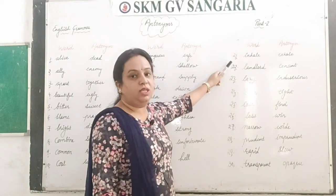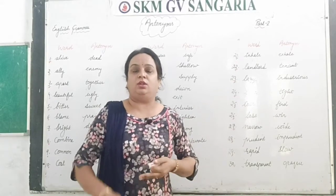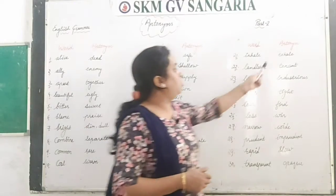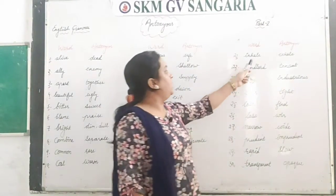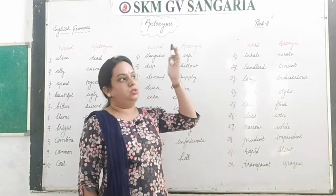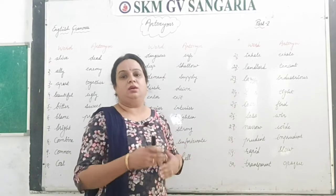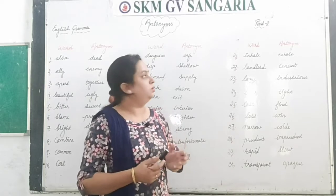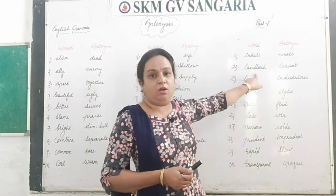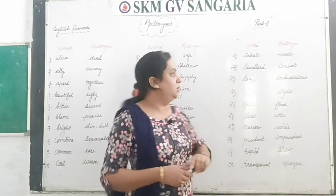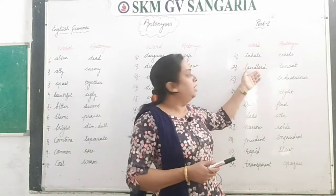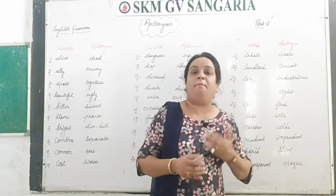Now word number 21 is 'inhale,' I-N-H-A-L-E. When we breathe in oxygen that is called inhale, and when we breathe out that is called 'exhale,' E-X-H-A-L-E. Next is 'landlord.' Suppose someone does not have their own home and lives in a paid house — that house belongs to the landlord, and the people living there and paying monthly rent are called 'tenants.' This applies to shops and workers as well — the landlord is the owner and tenants pay money to stay.